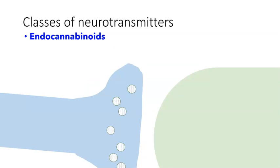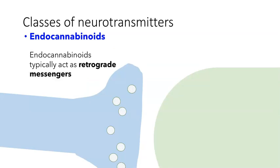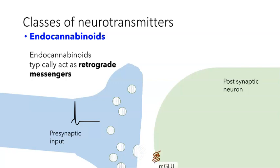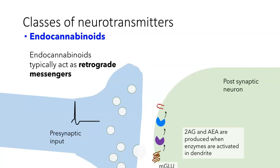Endocannabinoids typically act as retrograde messengers — this is really different from what we've seen so far. Suppose we have a presynaptic cell and a postsynaptic neuron. If the presynaptic cell has an action potential, it can release neurotransmitter that might bind to a metabotropic glutamate receptor, which in turn activates an intracellular cascade. This is one way to activate the enzymes needed to take a precursor molecule and produce the endocannabinoid. The endocannabinoid, once generated, diffuses back across the cleft and binds to cannabinoid receptors on the presynaptic cell membrane.